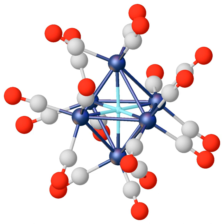Ionic or saline hydrides are composed of hydride bound to an electropositive metal, generally an alkali metal or alkaline earth metal. The divalent lanthanides such as europium and ytterbium form compounds similar to those of heavier alkali metals. In these materials the hydride is viewed as a pseudohalide. Saline hydrides are insoluble in conventional solvents, reflecting their non-molecular structures. Ionic hydrides are used as bases and, occasionally, as reducing reagents in organic synthesis.